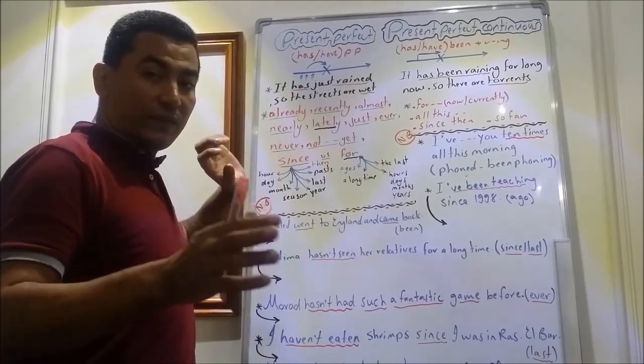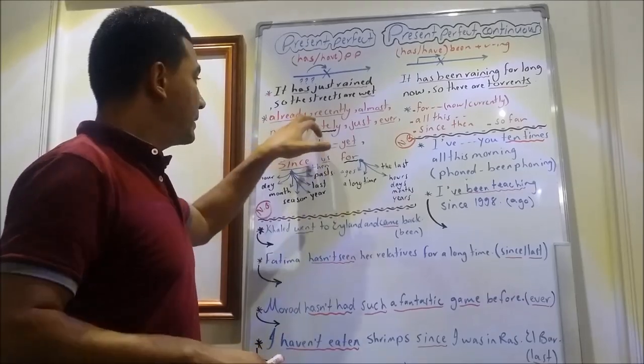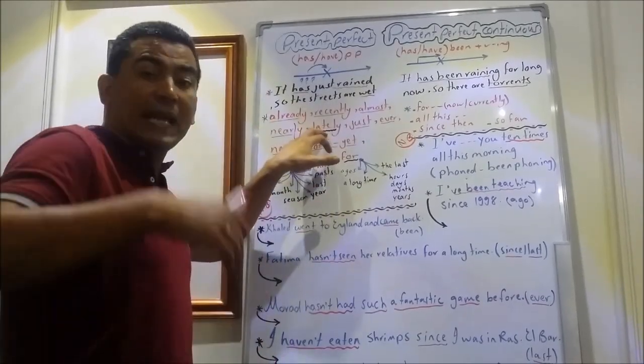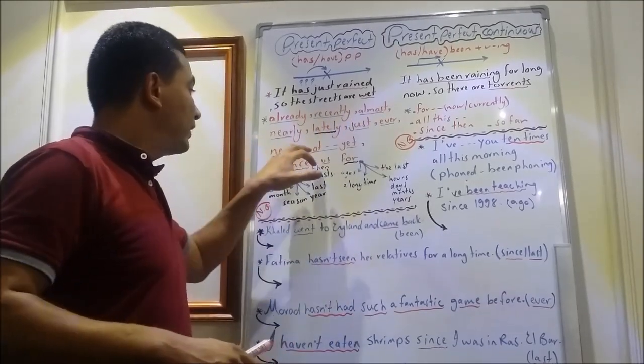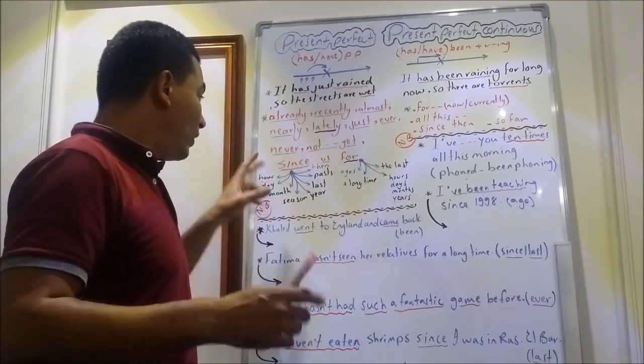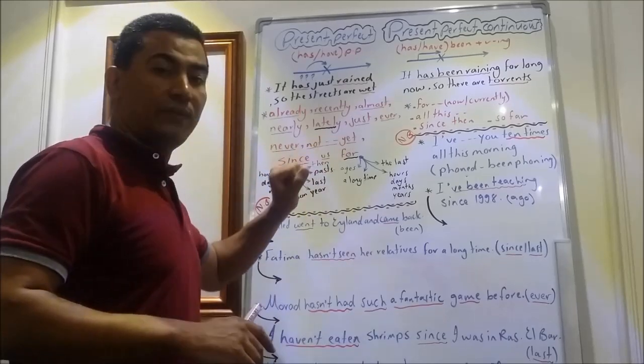The signs for present perfect: already, recently, almost, nearly, lately (lately might come in negation), just, ever, never, not, yet. Of course, we have since and for.